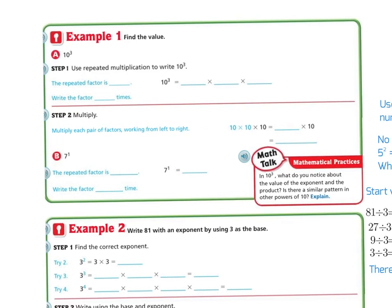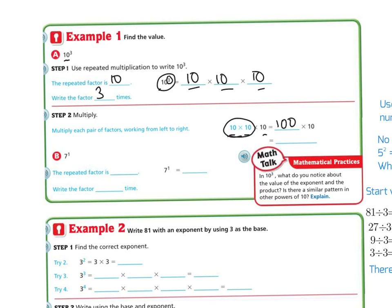Let's look at another example: 10 with an exponent of 3. The repeated factor is 10, and we're going to multiply that base 3 times. So 10 to the 3rd power is 10 times 10 times 10. Working left to right: 10 times 10 is 100, and 100 times 10 is 1,000.